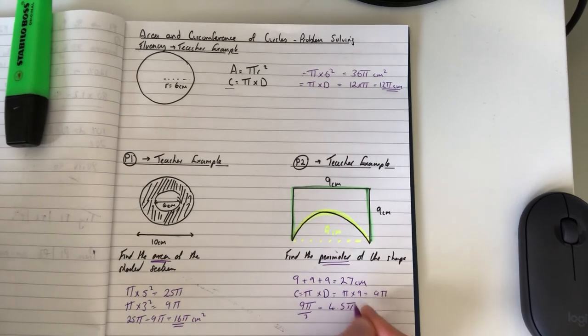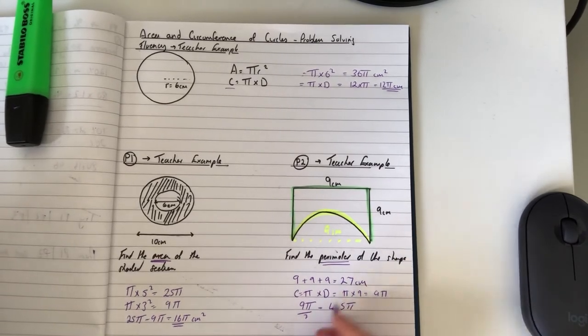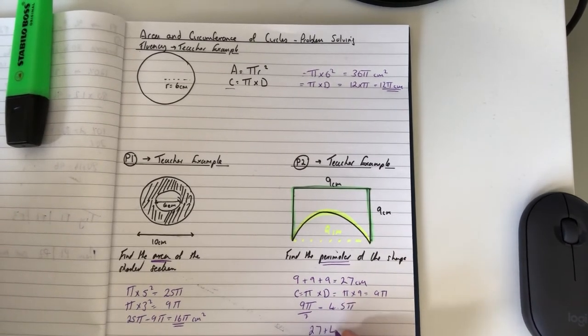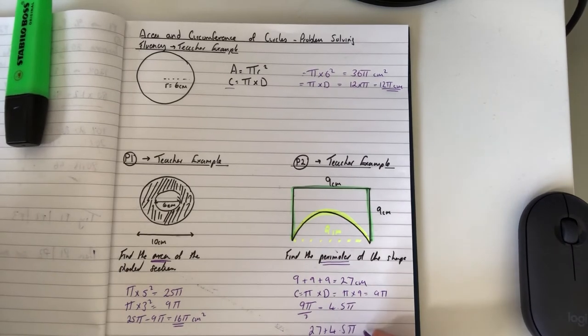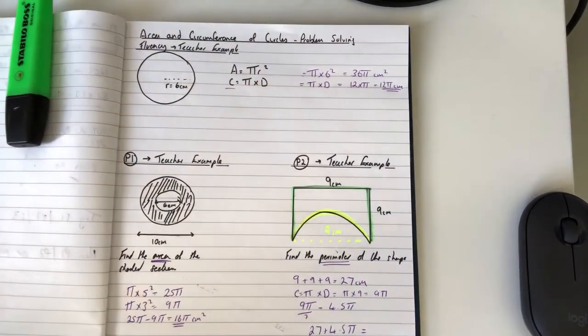That's 9π for the full circle. This is a semicircle so we divide by 2, so it's 4.5π. Then we add it to the 27, so it's 27 + 4.5π.